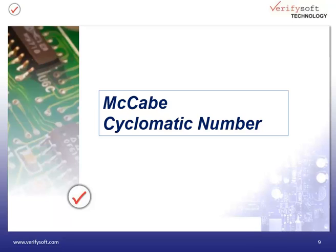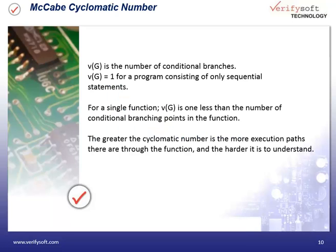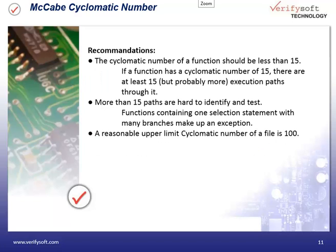The cyclomatic number of McCabe shows the number of execution paths. The cyclomatic number is the number of conditional branches. A program with only sequential statements has a cyclomatic number of 1. The higher the cyclomatic number is, the harder it is to understand the problem. For this reason, the McCabe cyclomatic number should be less than 15 for a function and less than 100 for a file.